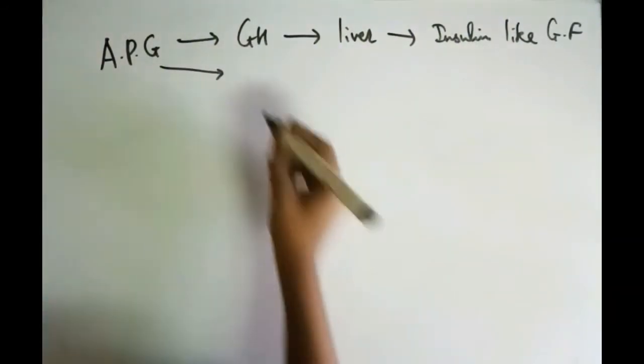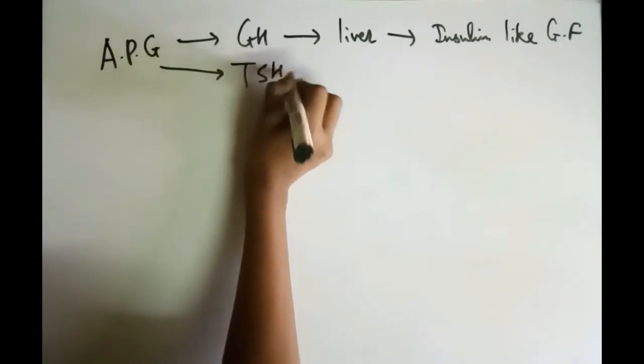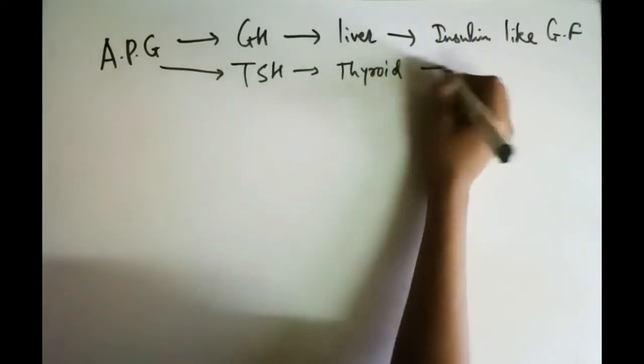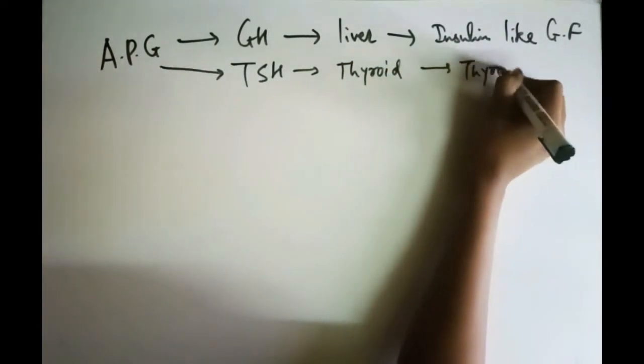Then the next hormone is TSH that is thyrotropin stimulating hormone. It is released from thyroid glands which releases thyroxine.